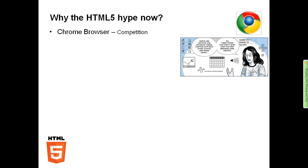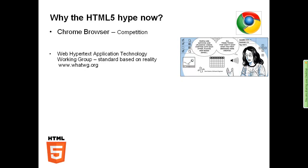Why is this all the hype now? Mostly because of Chrome. When it happened, it exploded onto the market and showed us a different way to build web-based applications — you could do so much more with the Chrome browser than with previous incarnations. The WHATWG — the Web Hypertext Application Technology Working Group — specifically worked on building a standard from reality. They looked at websites that were out there, identified common ways that various browsers had extended HTML, CSS, and JavaScript, and aggregated those extensions into a standard.